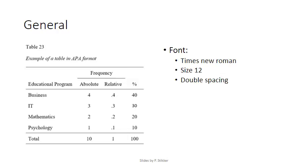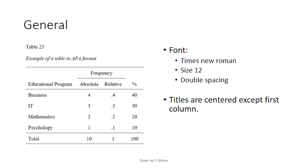APA recommends using Times New Roman as the font, size 12, and double spacing. The column titles are centered except for the first column. So the educational program here is aligned to the left, while all the other ones are centered.